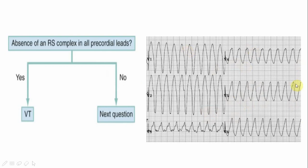Step 1 is concordance. Look at V1 through V6: are all QRS complexes showing positive concordance (all above baseline) or negative concordance? This is also called the absence of an RS wave in the precordial leads. In this ECG, from V1 to V6 all QRS complexes are positive and look similar — that is positive concordance. If concordance is present, this is VT.